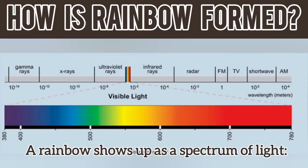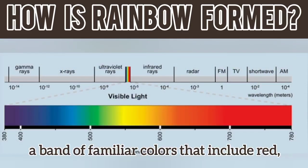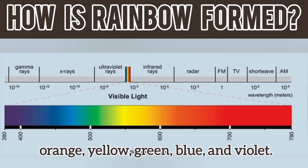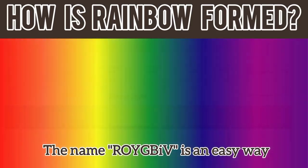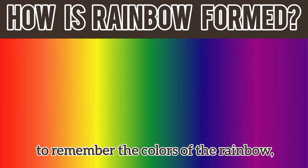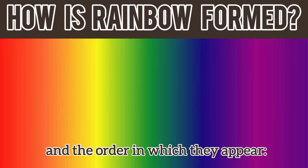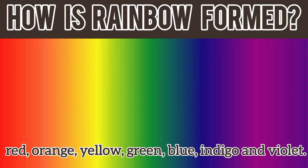A rainbow shows up as a spectrum of light, a band of familiar colors that include red, orange, yellow, green, blue, and violet. The name ROYGBIV is an easy way to remember the colors of the rainbow and the order in which they appear: red, orange, yellow, green, blue, indigo, and violet.